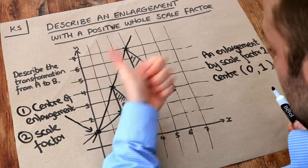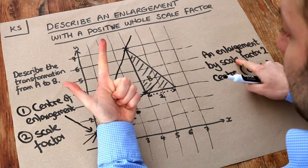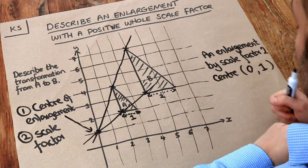So remember the three things we need to say. It's an enlargement. We need to say the scale factor. And we need to say the center of enlargement.